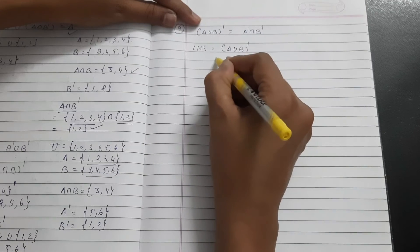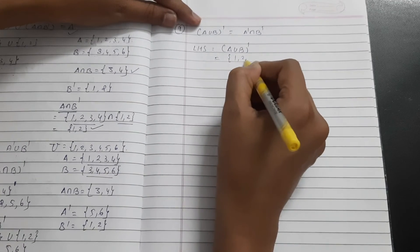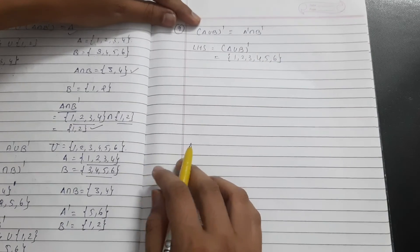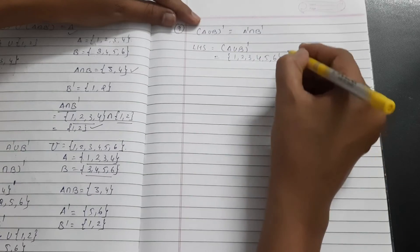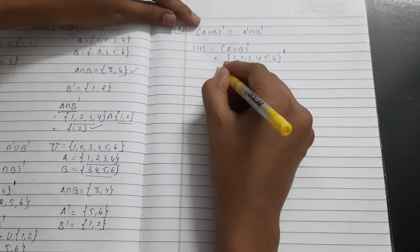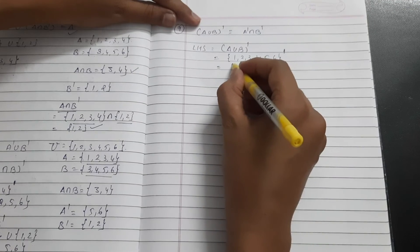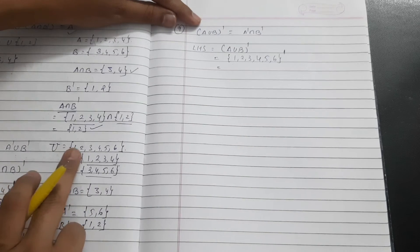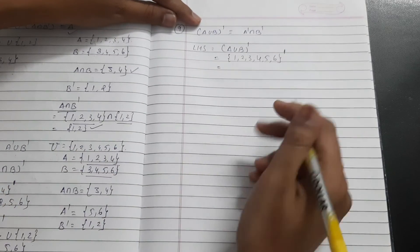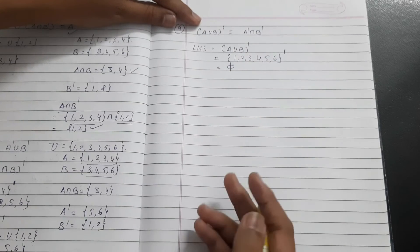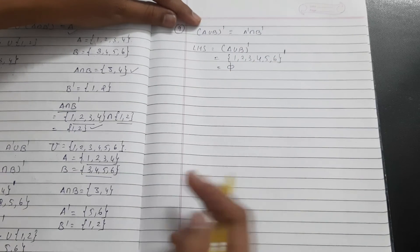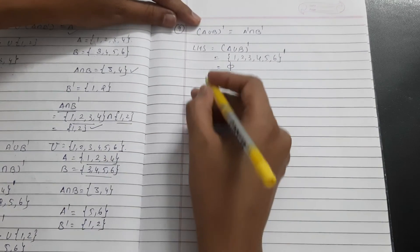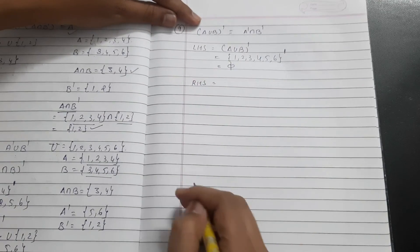Start with left hand side equal to A union B dash. We already have A and B from earlier. So take union of both: {1, 2, 3, 4, 5, 6}. But we don't want just union, we want complement. Complement means we take elements not in this. Universal set has only {1, 2, 3, 4, 5, 6}. Elements not in union - there are no other elements besides these. No problem, we get empty set or just what remains.